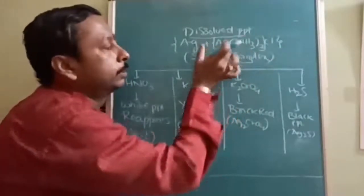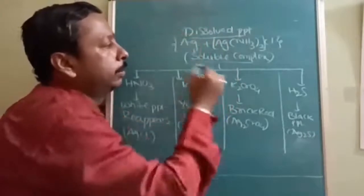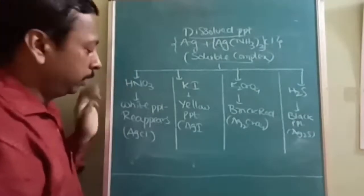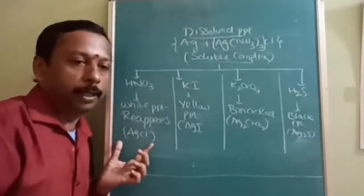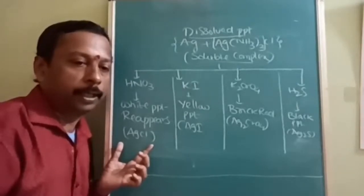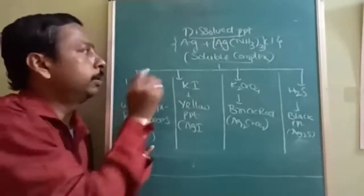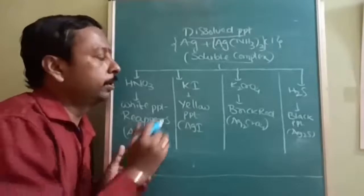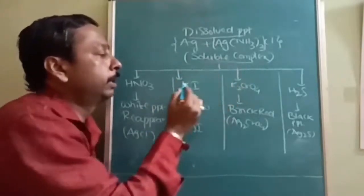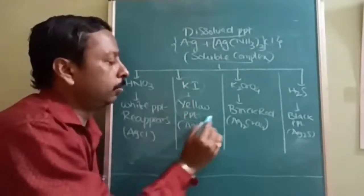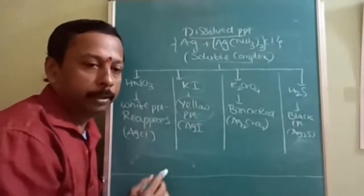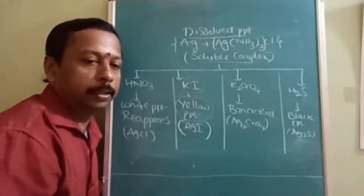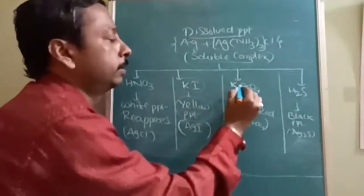First part of the dissolved silver complex is treated with HNO₃, and the white precipitate (AgCl) reappears, confirming the presence of silver. The second part is treated with potassium iodide (KI), forming a yellow precipitate of AgI.